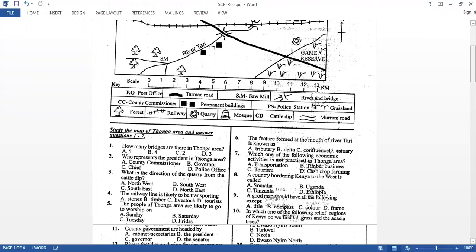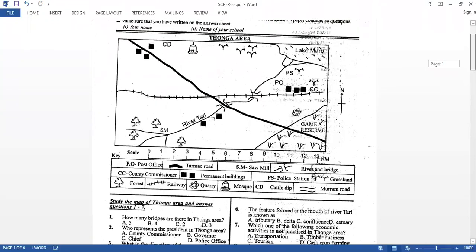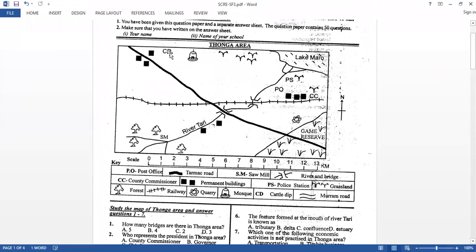Who represents the president in Thonga area? Or this area is administered by who? If you look here at the key, we have the county commissioner. So county commissioner represents the president in Thonga area. What is the direction of the quarry from the cattle dip? So you need to draw your compass here where the cattle is. Then down here you'll find the quarry. So it is southeast direction.